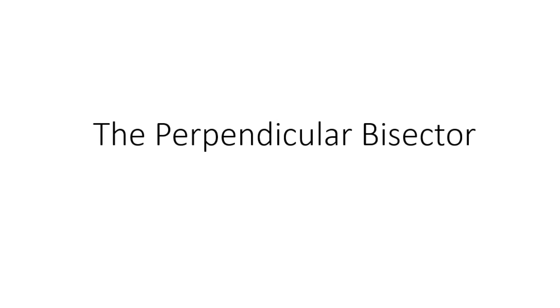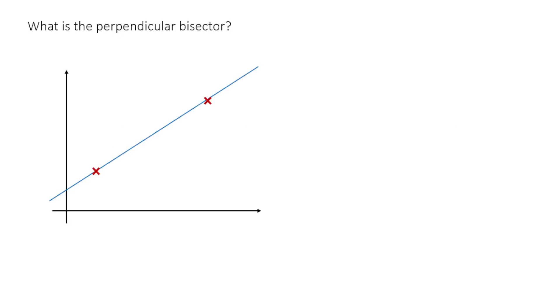So first we've really got to ask the question, what is the perpendicular bisector? Well, if you look at this, here we've got two points, let's call them A and B.